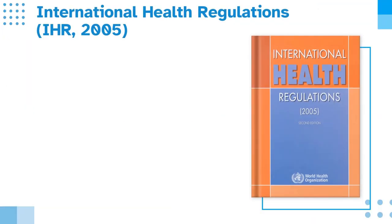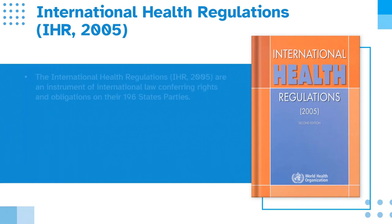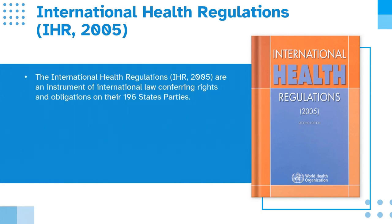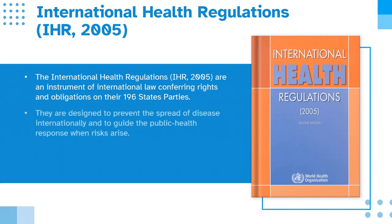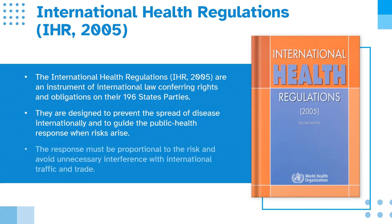What are the International Health Regulations? The International Health Regulations, IHR 2005 version, are an instrument of international law conferring rights and obligations on their 196 states parties. They are designed to prevent the spread of disease internationally and to guide the public health response when risks arise. The response must be proportional to the risk and avoid unnecessary interference with international traffic and trade.